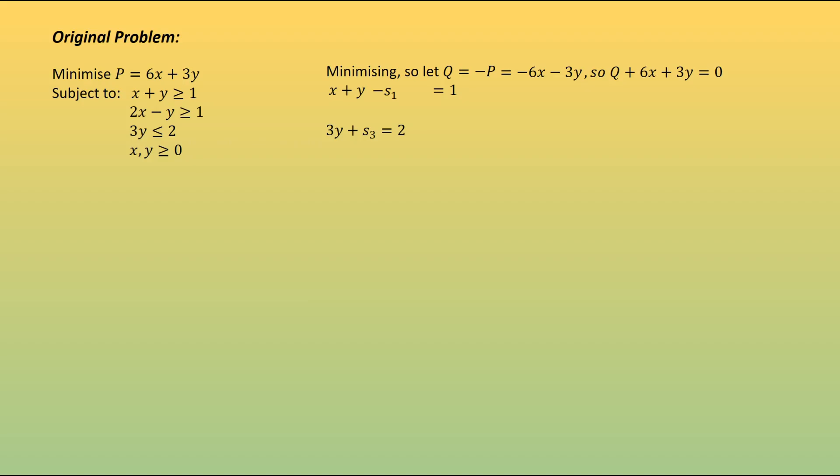However, initially, x and y both take the value 0, and this means that x plus y minus the surplus value of s1 will be negative. x and y both 0, surplus is positive, we've got a negative value. And so we need to add in an artificial variable. This can now be said to be equal to 1. We can do a similar thing with our second constraint, 2x minus y is greater than or equal to 1. We're going to subtract the second surplus value and add in an artificial value.